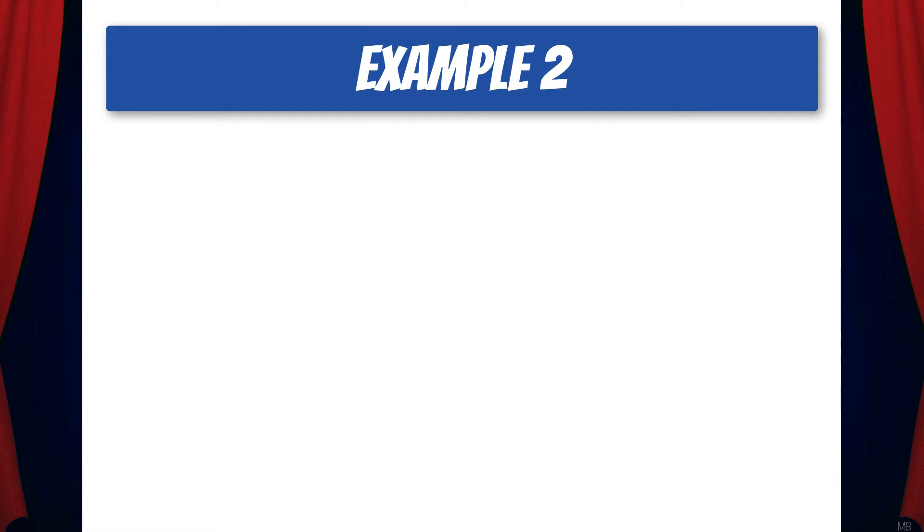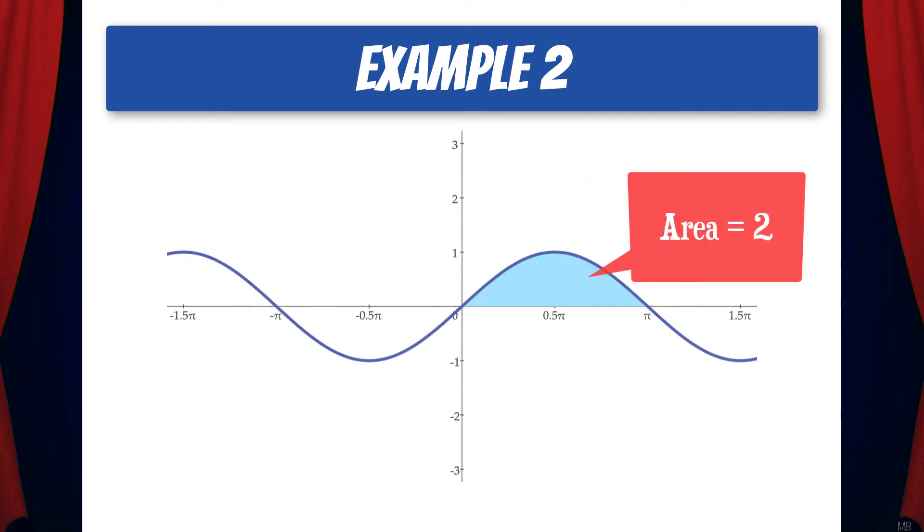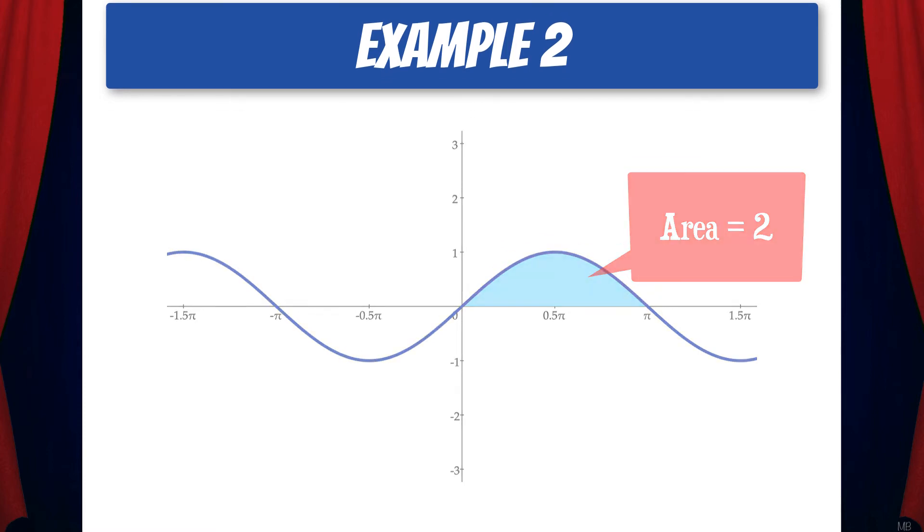Let's do another one. Evaluate the integral from 0 to pi of sine x dx. Well, the antiderivative is negative cosine x, and we'll evaluate that from 0 to pi using the fundamental theorem of calculus. So that gives us negative cosine pi minus negative cosine 0. And that simplifies to 1 plus 1, which is 2. Isn't that kind of cool and fascinating that the area under sine x from 0 to pi turns out to be a whole number?